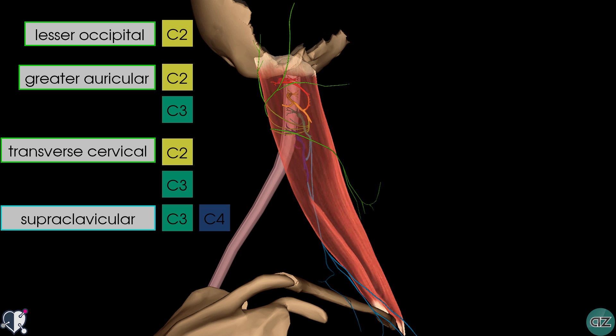So those are all the main branches of the cervical plexus. To find out more and to review some notes on this tutorial, please visit teachmeanatomy.info — the relevant links are in the video description below. For more videos check out anatomyzone.com. Thank you for watching.